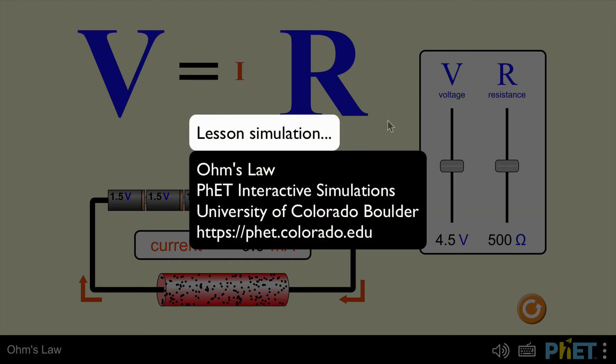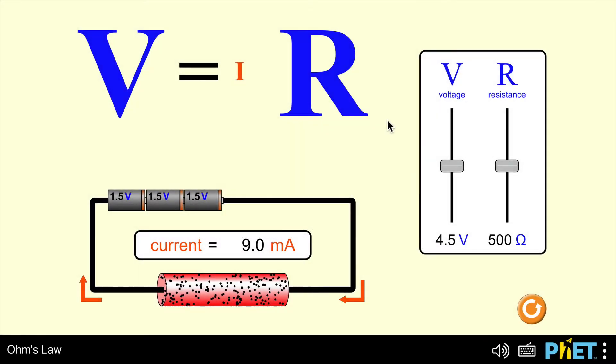Hi there. This is another of the PhET simulations. This one is all about Ohm's law. And of course, Ohm's law, which is V equals IR, is basically the relationship between voltage, current and resistance.